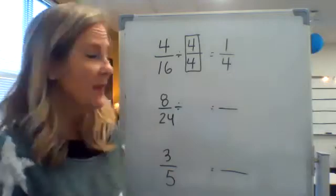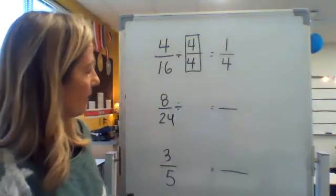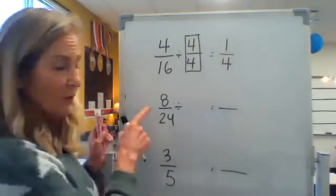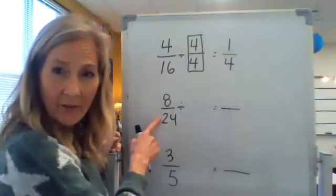So let's think about what we can divide. What factor do these numbers have in common? I automatically see that they're even numbers so I know I can divide them by two. But is there any other numbers you see that both of these can be divided by or a factor that they both share?